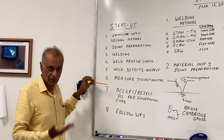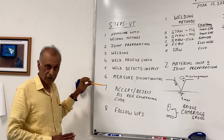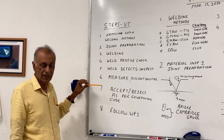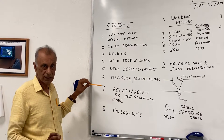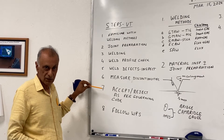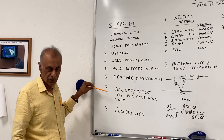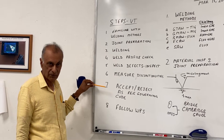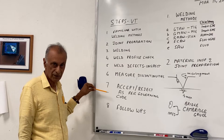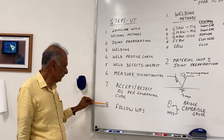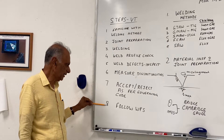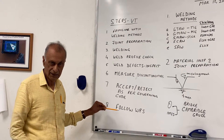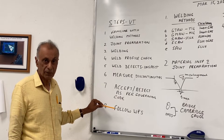The reason we measure is to apply the acceptance criteria, because we don't reject every discontinuity. Some will be acceptable and some will be rejectable. How that is determined is by the governing code. The governing code tells us what is acceptable and what is not, based on size or identity. If it is a crack, there is no need to measure — it's an automatic reject. But in other cases like undercut, we may be required to measure to see if we can accept it or not. All of this will be on a WPS — the welding specification — and you should have a copy of that as a visual inspector to see the acceptance criteria, steps, temperatures, and all that.